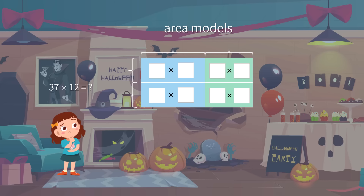Similar to what we have done to find 46 times 8, we first convert the factors to expanded forms. For number 12, we have one 10 and two 1s. Thus, it can be divided into 10 plus 2.